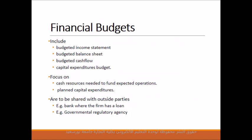Financial budgets include a budgeted income statement, budgeted balance sheet, budgeted cash flows, and a capital expenditure budget. These focus primarily on cash resources needed to fund expected operations and planned capital expenditures. They are intended to be shared with outside parties — for instance, a bank where you have a loan may want to see your financial budgets.